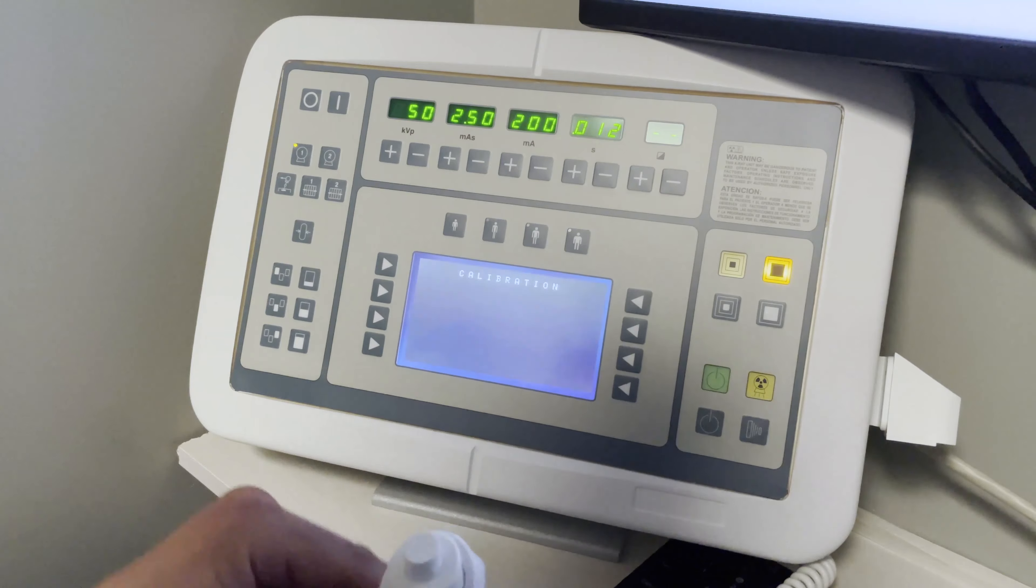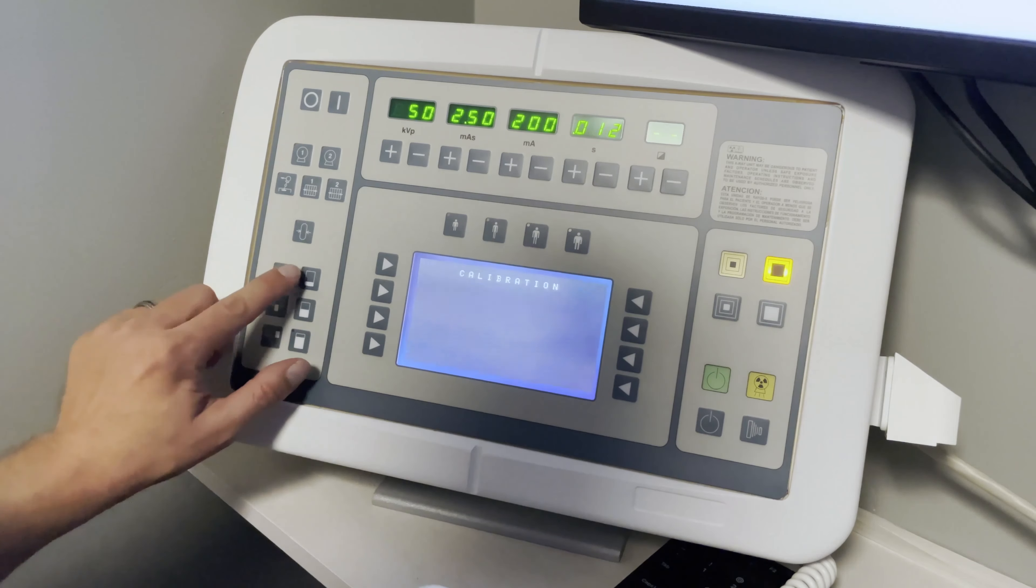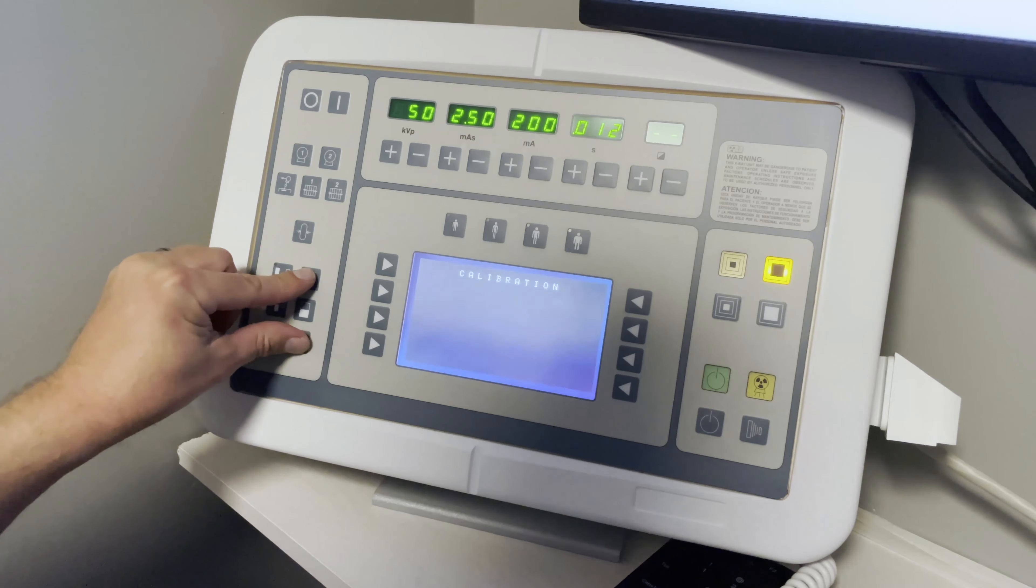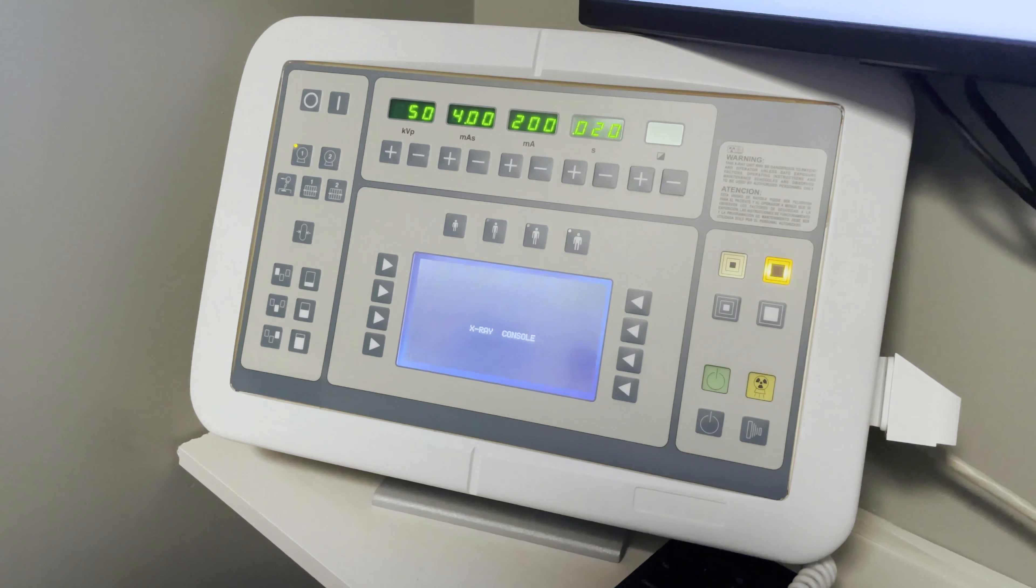After hitting the I button to get out of calibration mode, you want to press the 200 and the 800 button here at the same time. And that brings you back to the X-ray console.